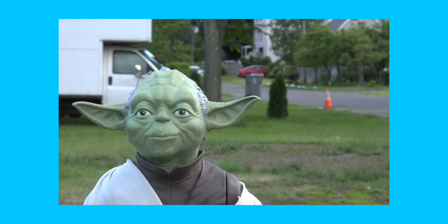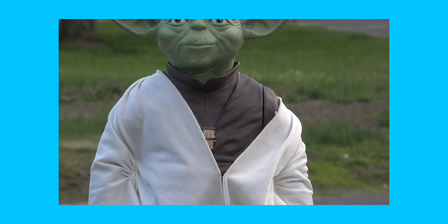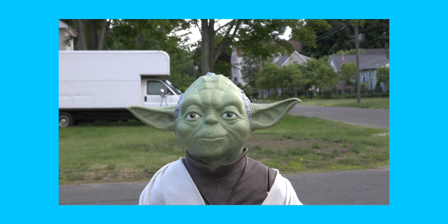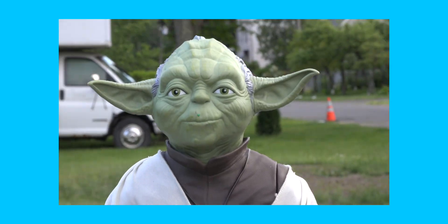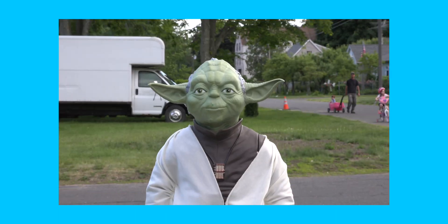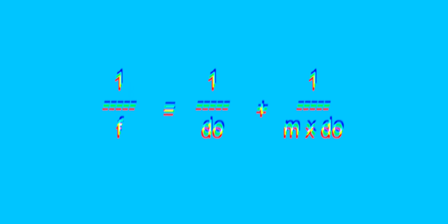I'm quite fond of the dolly zoom, and I liked my own results so much that I became confident in my ability to include it in another project of mine. However, instead of trying to pull it off by eye like before and taking dozens of tries to get right, I wanted to plan it out better. To figure out the math behind the dolly zoom, I asked my physics teacher for help. After an hour or so of talking and planning, we ended up with this equation: 1 over focal length equals 1 over distance from the object, plus 1 over magnification times distance from the object.